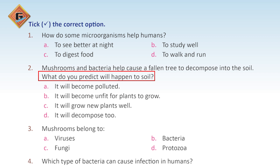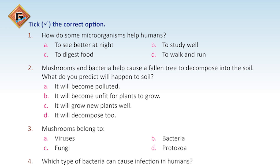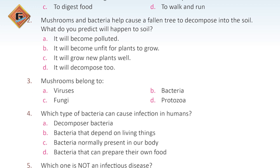What do you predict will happen to soil? You remember that you were taught that new plants will grow as well. We have learned that when fungi form a colony, the dead matter will be decomposed. After bacteria start working, it will be fully decomposed, and new plants will begin to grow when the tree becomes part of the soil. So C is the correct option.